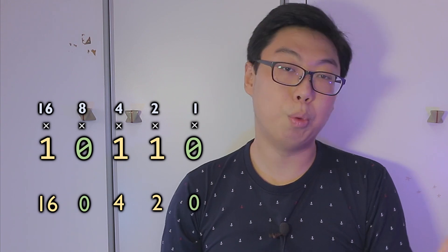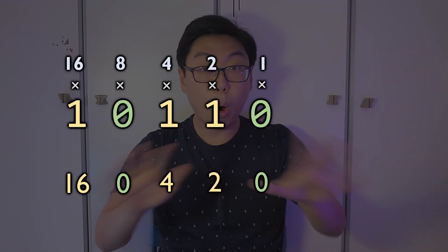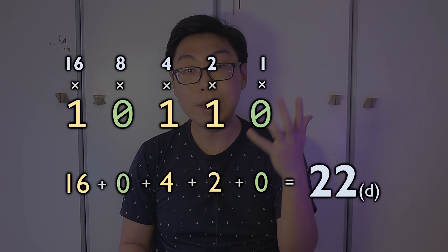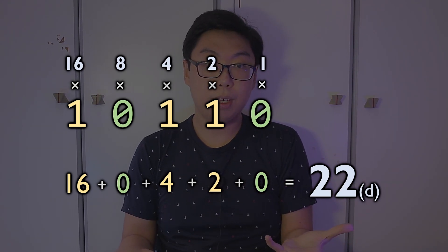We can even convert binary back to decimal to make it easier to understand. Take this bit string for example. If we take each bit to represent an increasing power of 2, each bit acts as a switch. If it's 1, its corresponding power of 2 is switched on; otherwise it is switched off. We take all those numbers, add them together, and we have our decimal conversion. This method works for any base, including base 10 — just take powers of 10 instead. But as all the cool academics say, we'll leave this as an exercise for the reader.